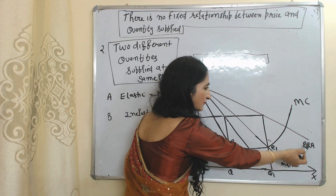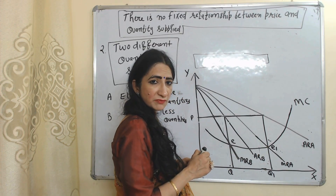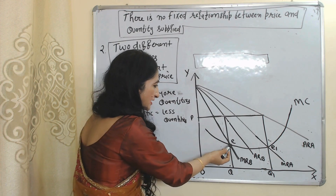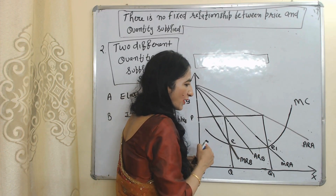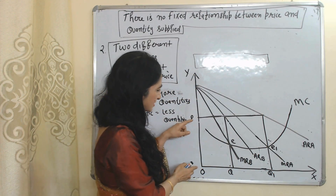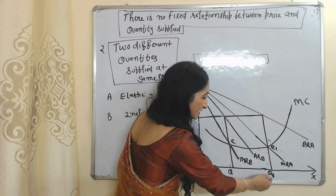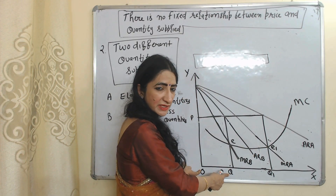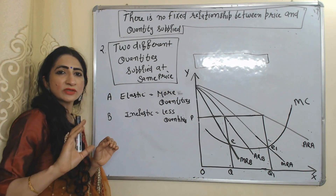MRA and ARA show marginal revenue and average revenue in Market A where demand is elastic. MC is the marginal cost, equal in both markets. At the equilibrium point in Market B, marginal revenue equals marginal cost. Similarly, at the equilibrium point in Market A, marginal revenue equals marginal cost. The monopoly charges the same OP price from both markets, but sells more OQ1 quantities in Market A due to elastic demand and less quantities in Market B due to inelastic demand. This confirms there is no fixed relationship between price and quantity supplied, which is why there is no supply curve under monopoly.